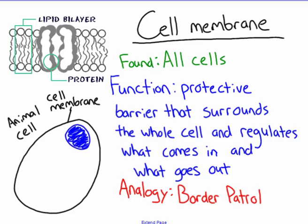The cell membrane is a crucial organelle because it's found in all cells — prokaryotic and eukaryotic. The function is to act as a protective barrier that surrounds the whole cell and regulates what comes in and what goes out. My analogy for this is border patrol, because if you want to enter or exit the cell, you need to go through the cell membrane.